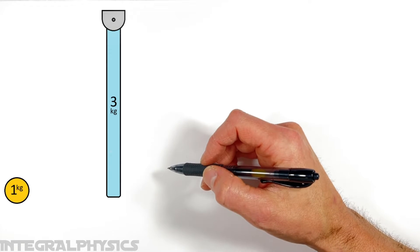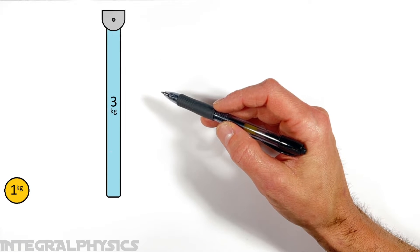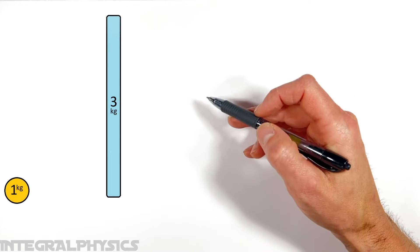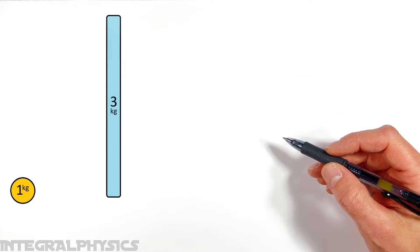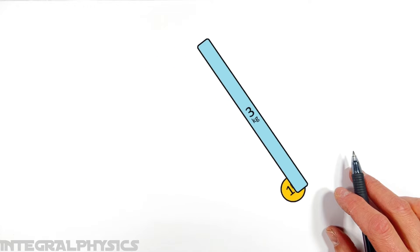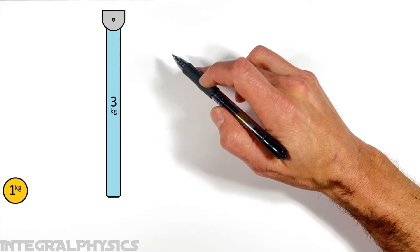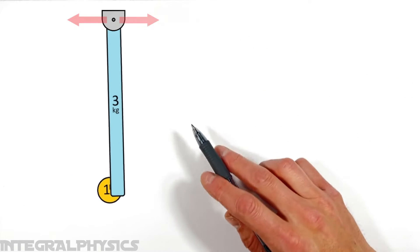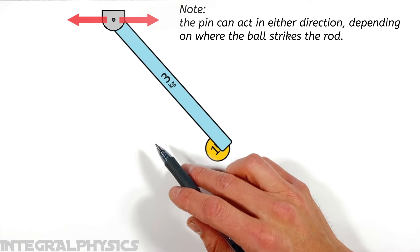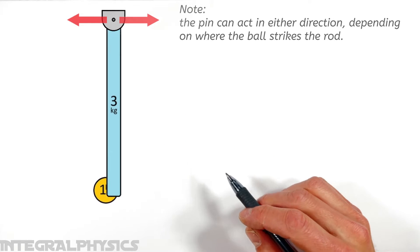But because today we're dealing with a rod hanging from a pin, there's a tiny but critical difference. If we remove this pin and allow the rod to just float in space, when the ball collides with the rod they'll move together to the right. It's this pin that keeps the end of the rod from moving horizontally, meaning the pin acting horizontally exerts an outside force in this collision, which means linear momentum isn't conserved.